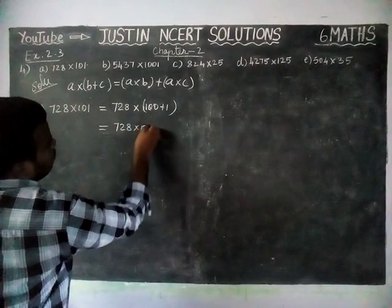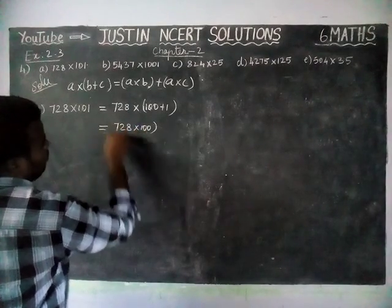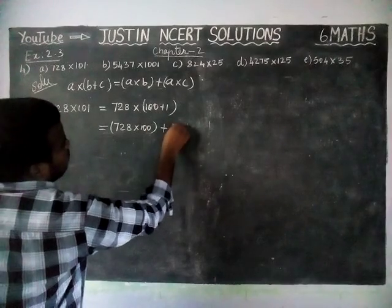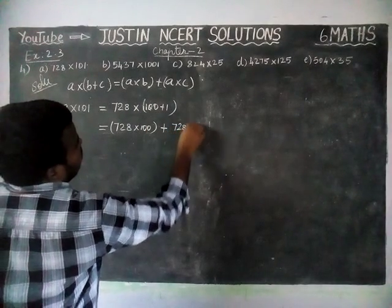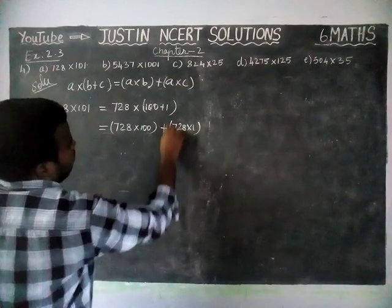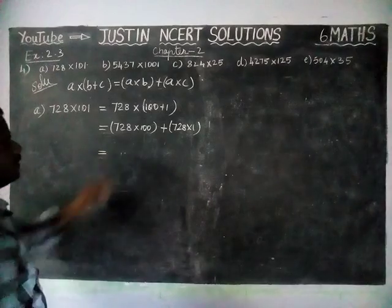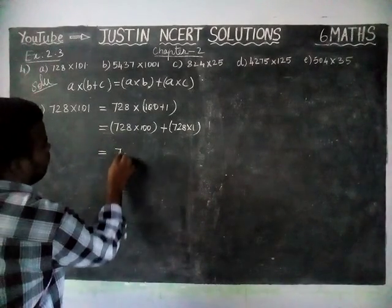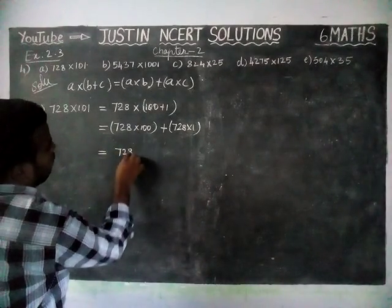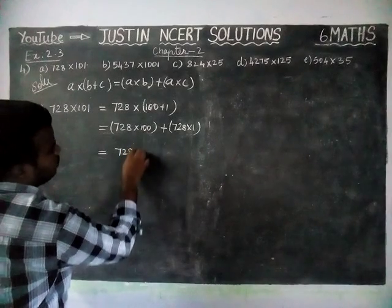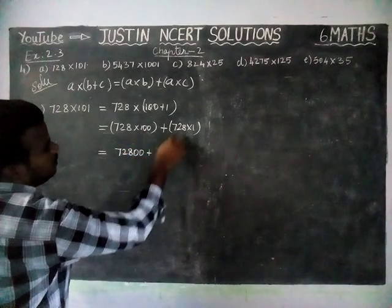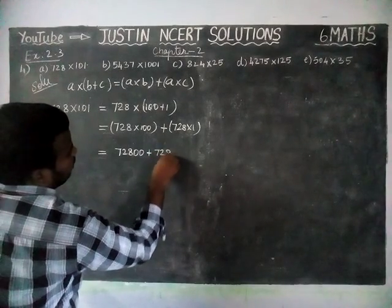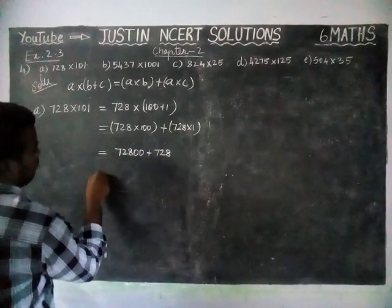728 into 100 plus 728 into 1. When we multiply a number with 1, we get the same number. 728 into 100 gives us 72,800 — because there are 2 zeros, we add 2 zeros. And 1 into a number equals the same number, so 728.